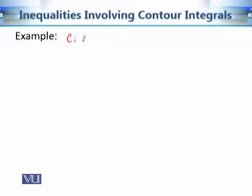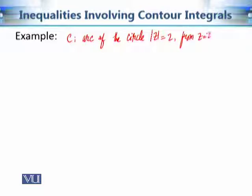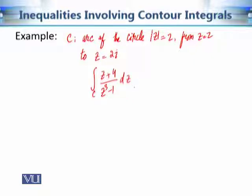Now consider this contour integral where C is the arc of the circle |z| = 2 from the initial point z = 2 to the final point z = 2i. If we want to evaluate the contour integral of (z + 4)/(z³ − 1) dz, it is quite complicated to evaluate this directly, but using the ML inequality we can find that the upper bound of the modulus of this contour integral is 6π/7.